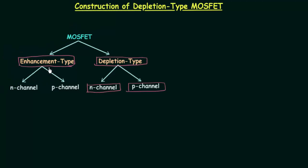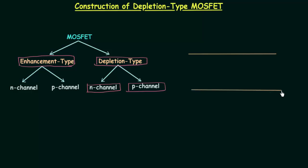Like enhancement type MOSFET, a slab of p-type material is formed from a silicon base and it is known as the substrate. We take a silicon wafer and introduce trivalent impurities into it, and then we have a p-type substrate.